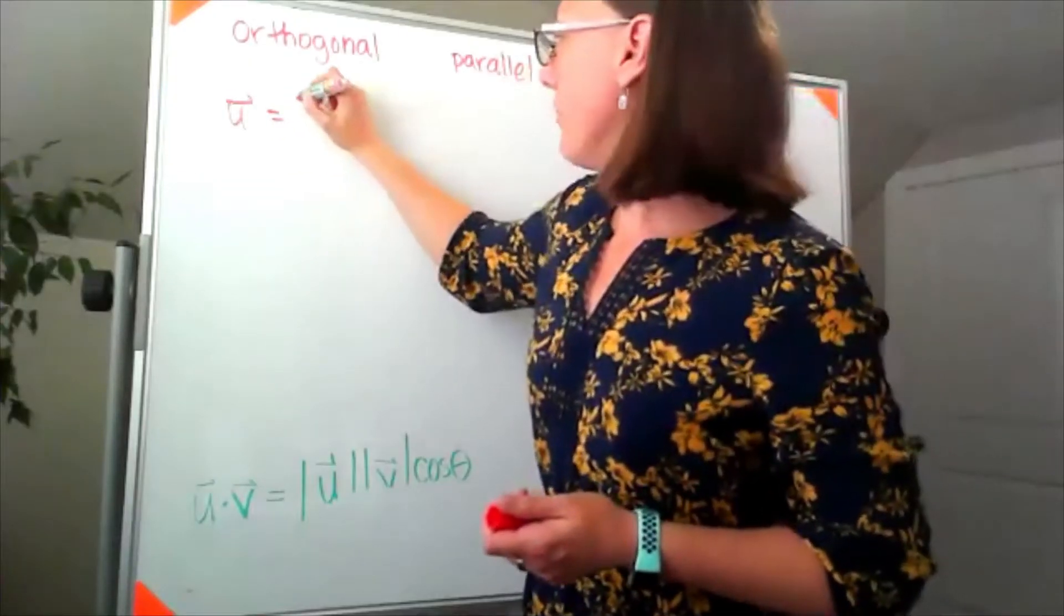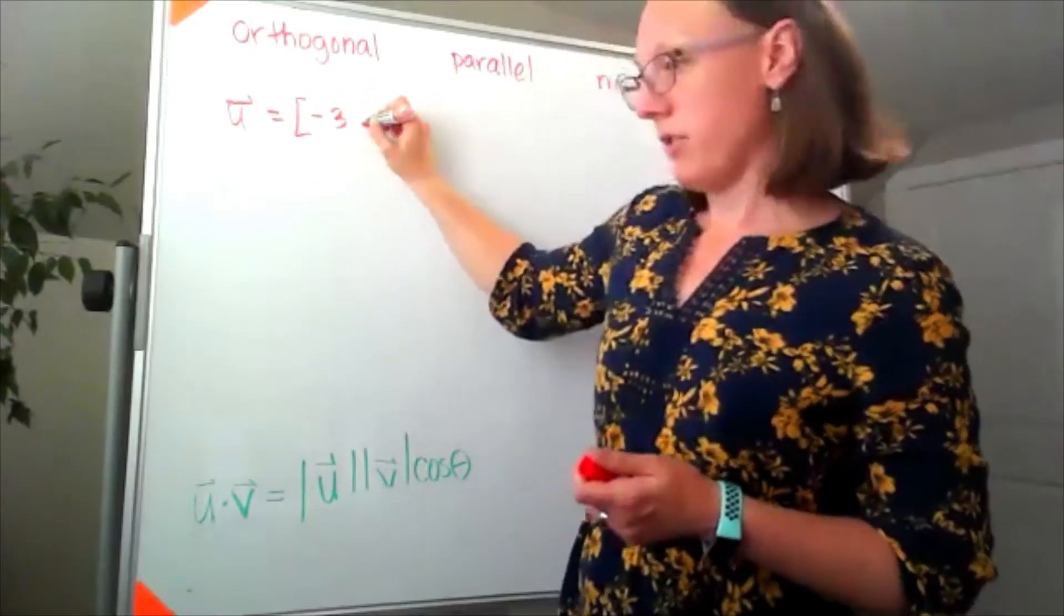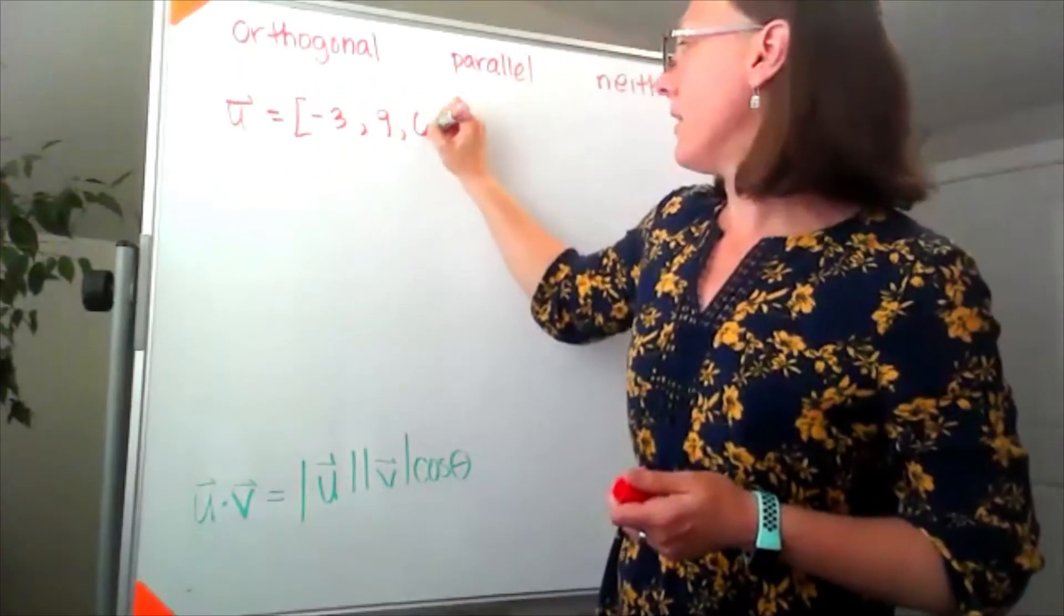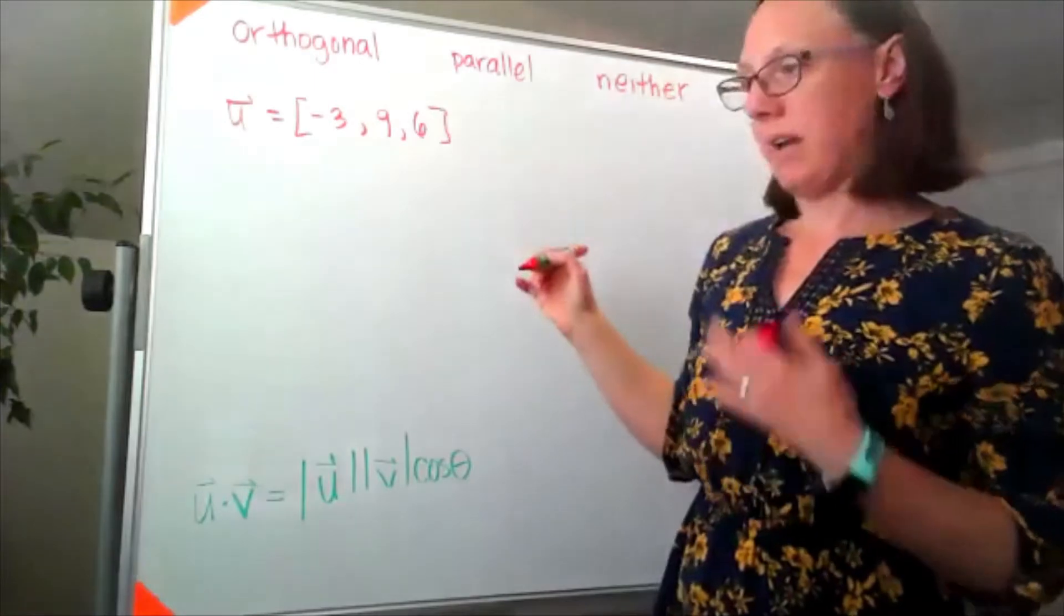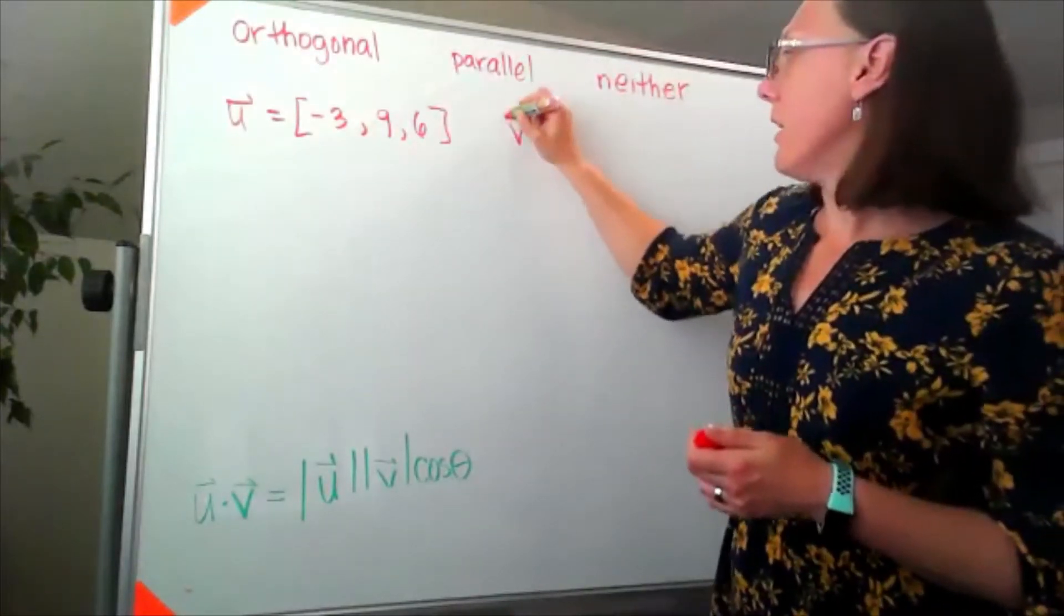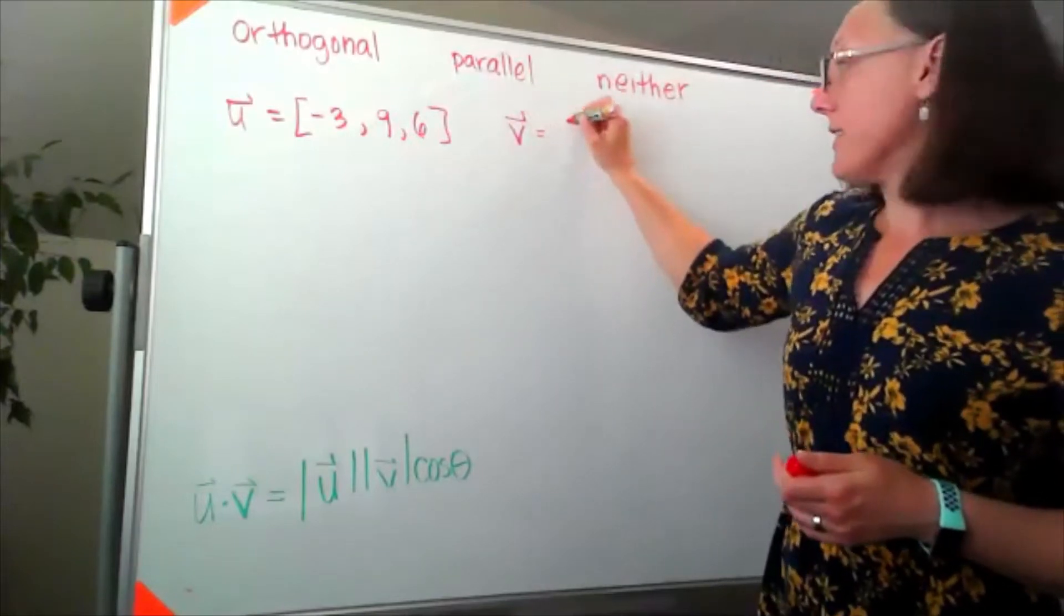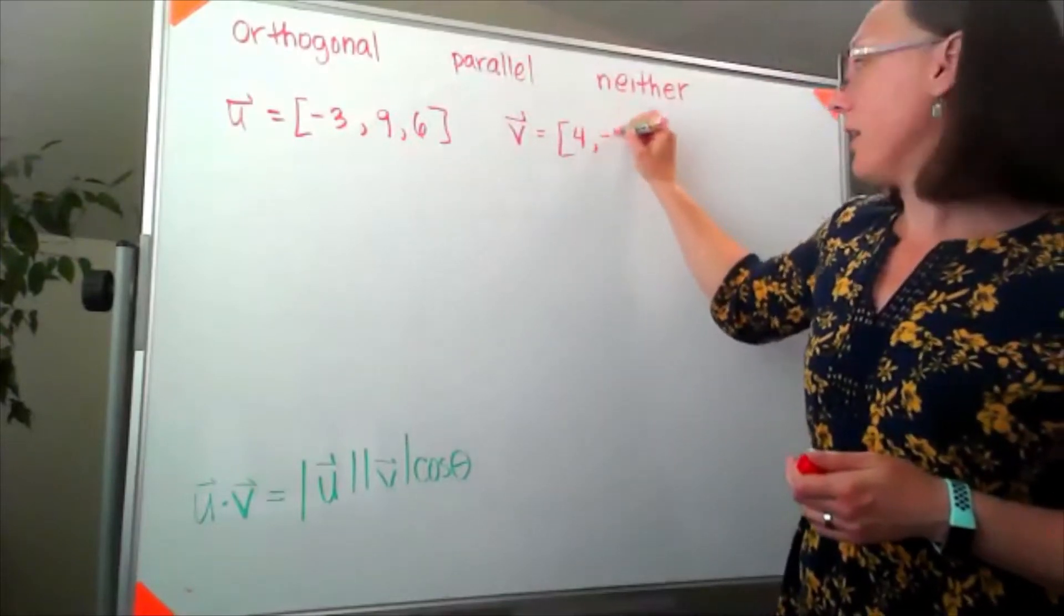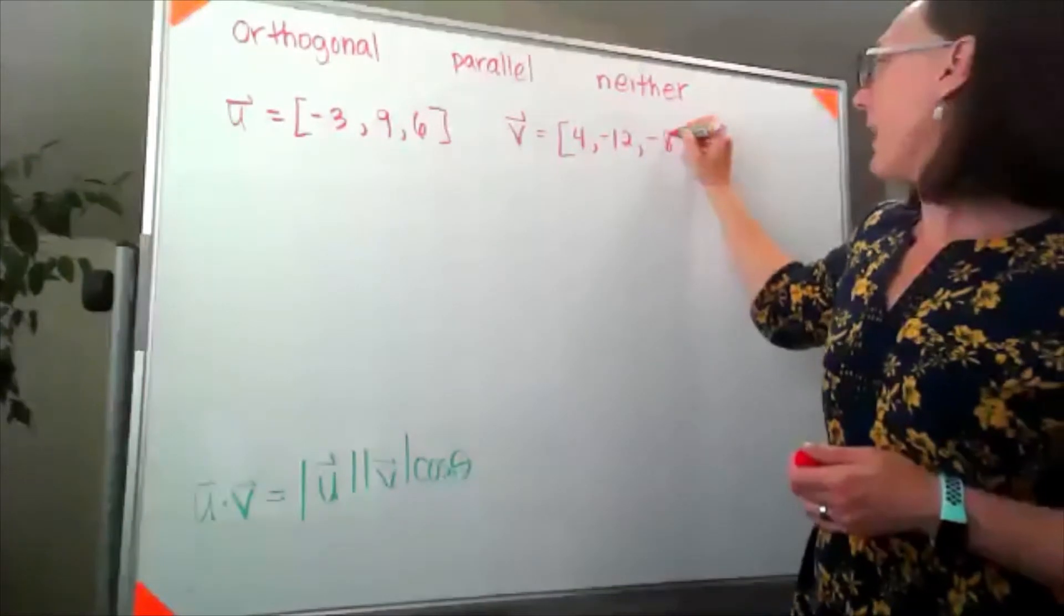I've got a u vector of negative 3, 9, 6. I said 26. It's a 6. It's Friday. I'll blame Friday. V is equal to 4, negative 12, negative 8.